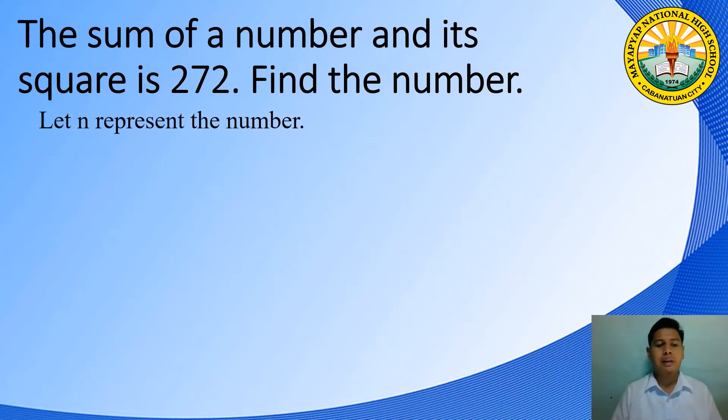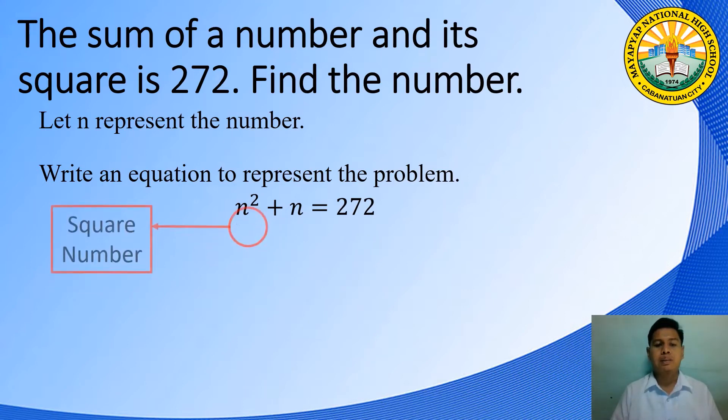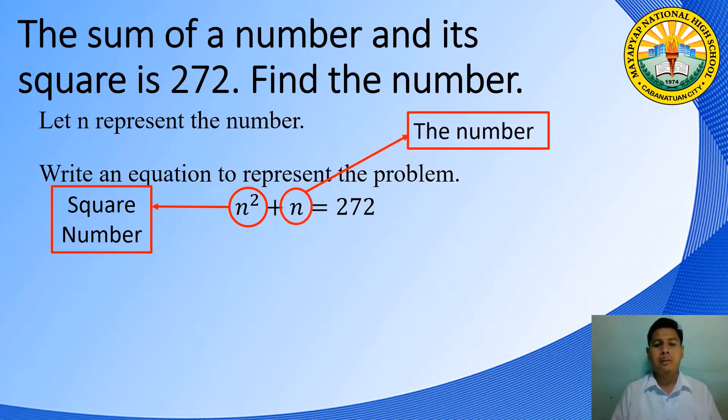First, let n represent the number. Second, write an equation to represent the problem. n² + n = 272. N squared is the square number plus the number and their sum is 272. Let us write the equation in standard form. Since the left side of the equation is factorable, we can solve the quadratic equation by factoring.